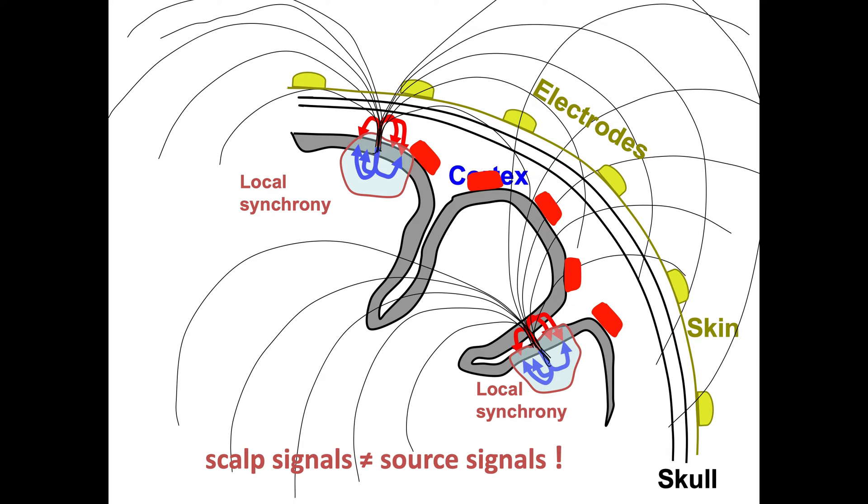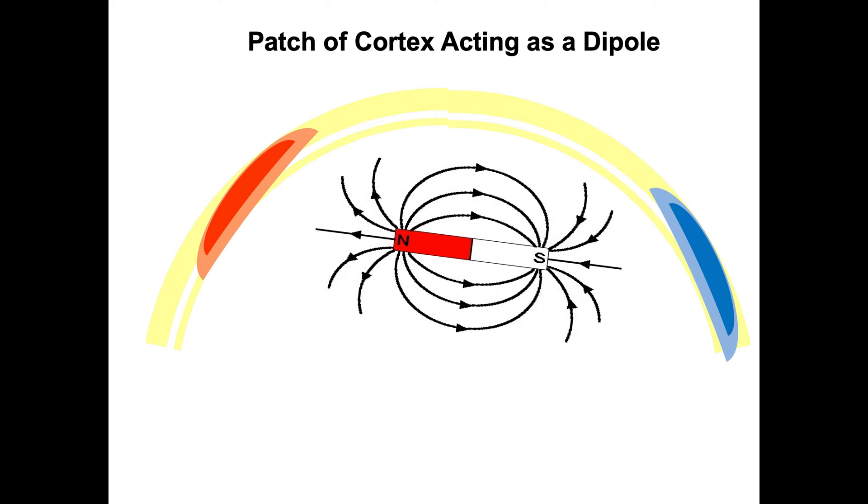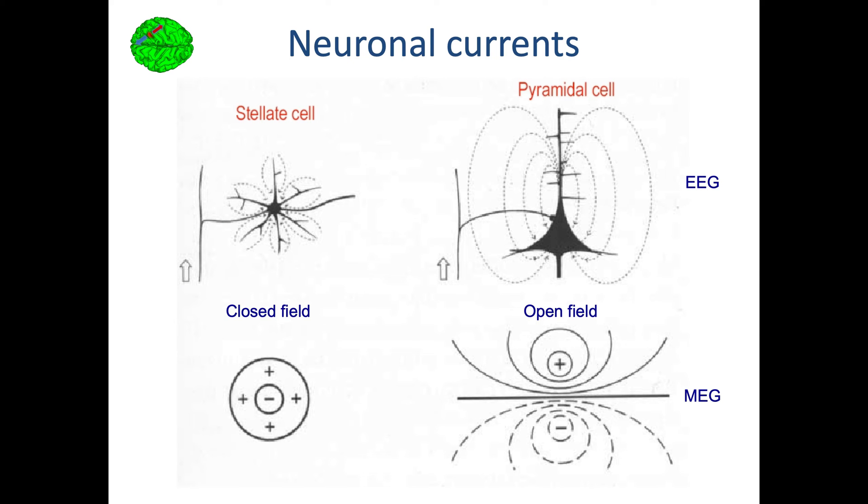Scalp signals are different from source signals. When we have a potential at the surface of the scalp, for instance a positive and a negative potential, what this represents is the activity of a dipole, which can be represented as a battery. The battery has a specific electric field which is recorded at the surface of the scalp. Where does this electrical potential come from? It's generally accepted that it comes from pyramidal cells.